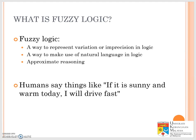So how do we use this? As humans we always use this. For example, if it is sunny and warm today, I will drive fast. So how sunny is sunny and how warm is today? And how fast are we going to drive? All of this is uncertain because there are no definite numbers.